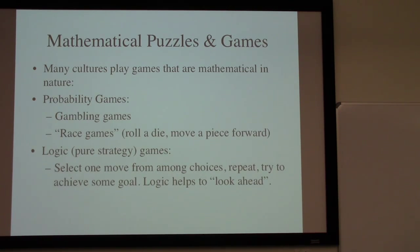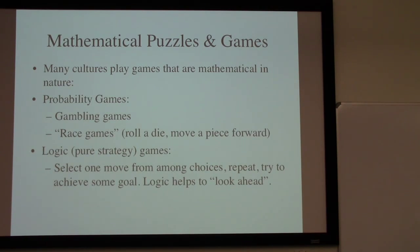Generally, these puzzles involve having several choices at any stage. We have to select one move from among the various choices, then pick another move after that — some sequence of moves. We're trying to achieve some overall goal, and the use of logic allows us to think through what might happen as a result of one action now. In other words, how far ahead can we think in terms of the possible choices we will have?